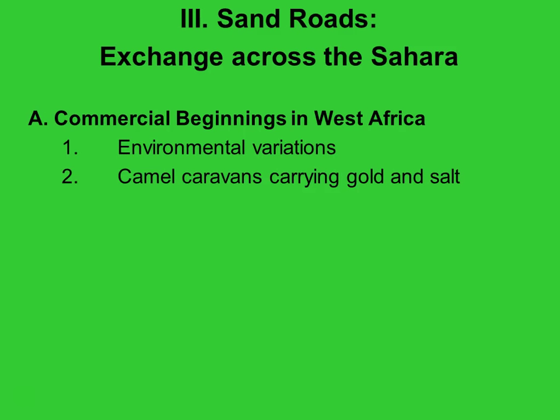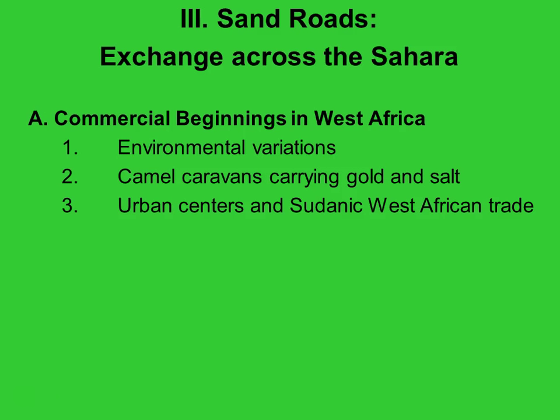The introduction of the camel changed the course of trade in Africa. Now massive caravans of hundreds of people and thousands of camels could bring salt and other goods from the north across the dangerous Sahara in exchange for gold and other goods in the south. Soon Arab merchants would bring the news of the Islamic revelations to West Africa. During the classical era there were a number of urban centers along the Niger River that were key hubs of trade. With the spread of Islam in the post-classical era, Arab travelers knew the lands south of the Sahara as the Sudan — meaning 'land of the blacks' — as opposed to the lighter-skinned Berbers of North Africa, whose region they called the Maghreb.